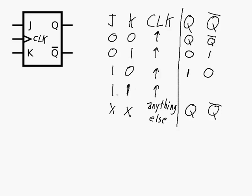Here's the interesting one for the JK flip-flop: when J is 1 and K is 1, and we have a rising edge of the clock, we have a toggle condition. If Q is a 1, it will become a 0; if Q is a 0, it will become a 1. Essentially, Q becomes Q-bar and Q-bar becomes Q. So we have: latch, reset, set, and toggle. This toggle can have some useful applications.